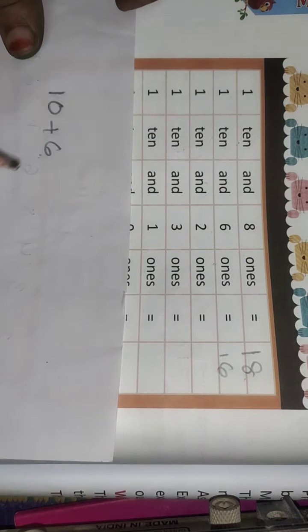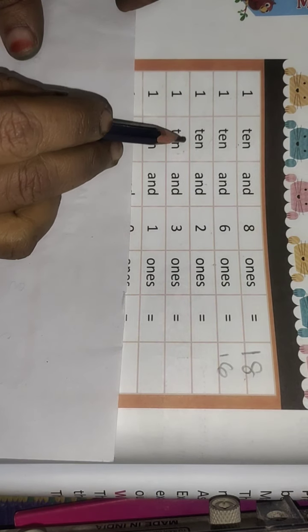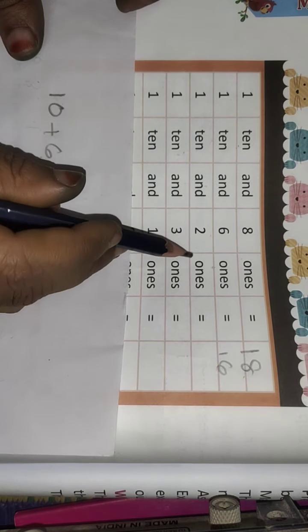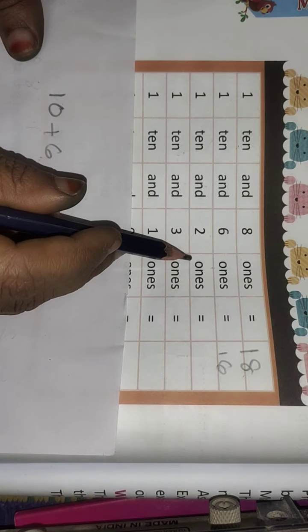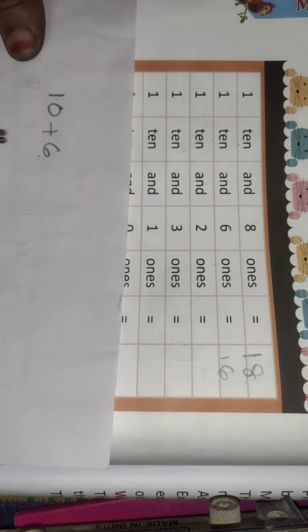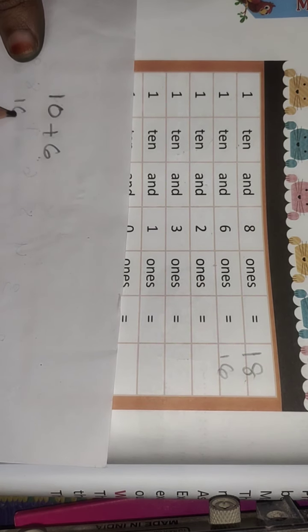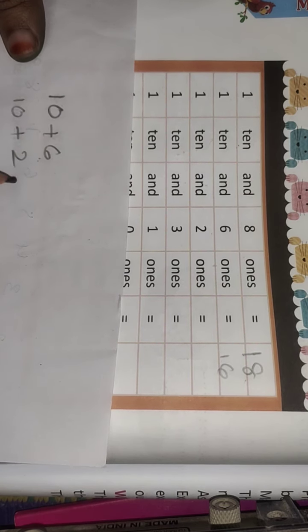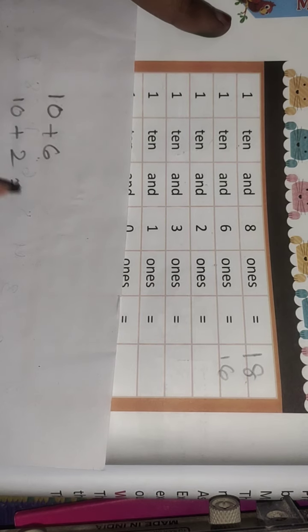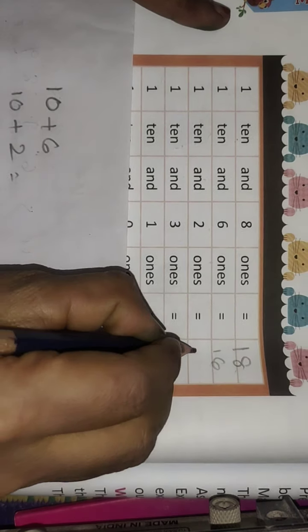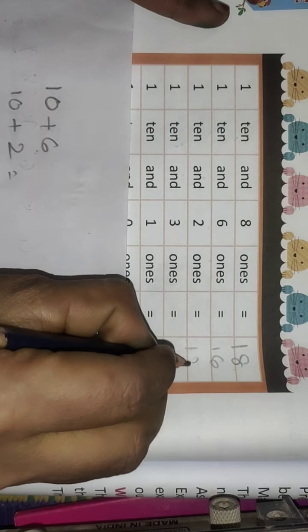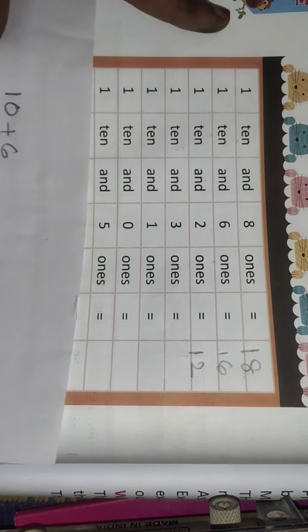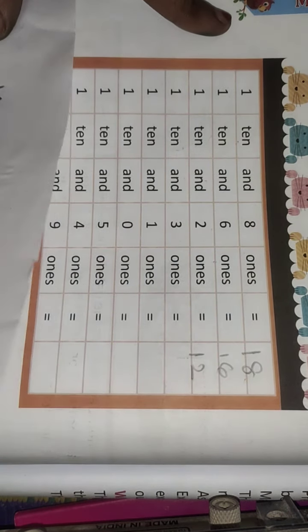Next — 1 ten and 2 ones. 1 ten equals 10, 2 ones equals 2. 10 plus 2 equals 12.